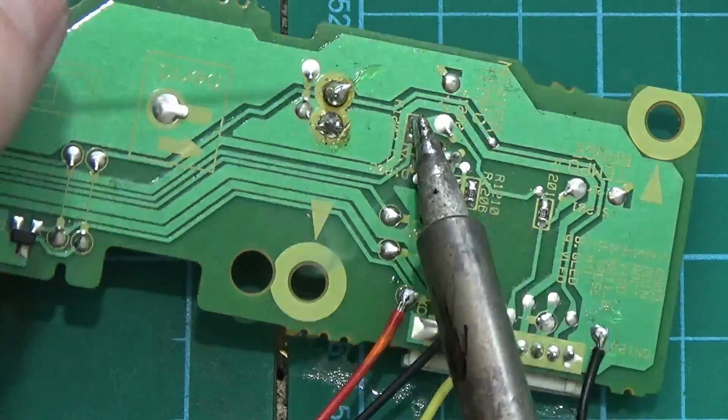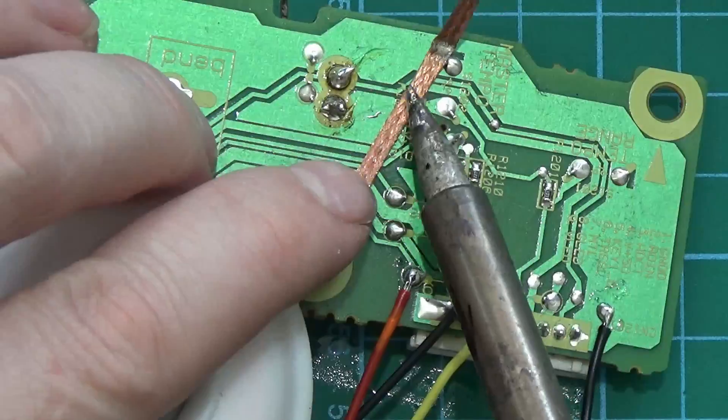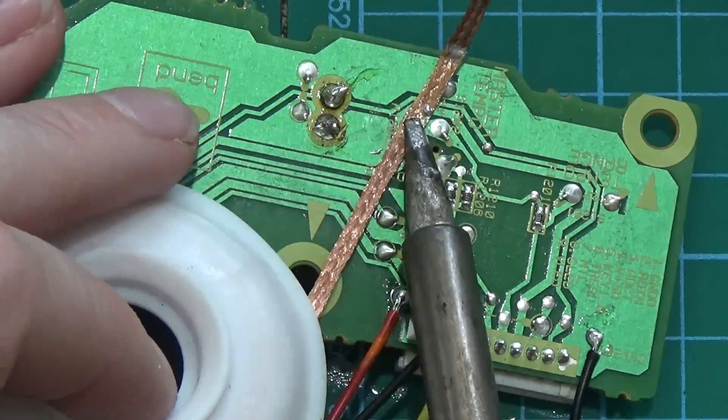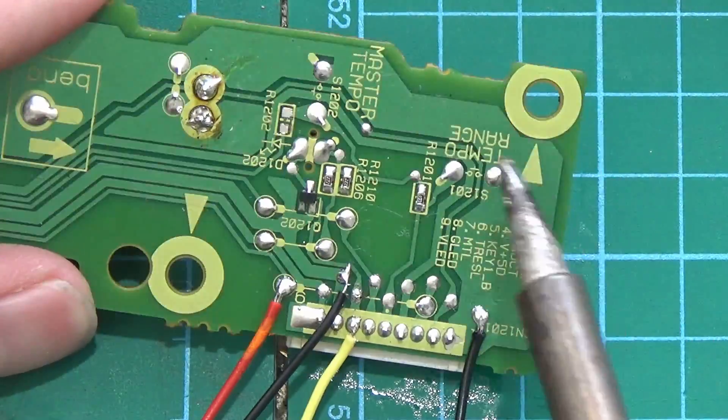Now we're going to remove the resistors for the buttons that we need to isolate. Just use the solder braid like before to remove up any excess solder. Second resistor for the tempo range button.